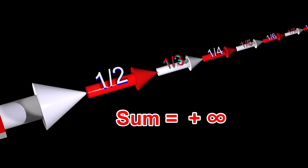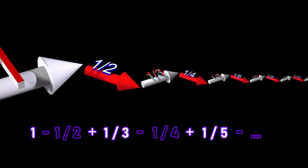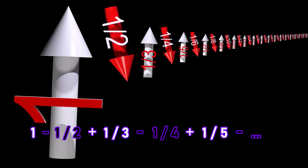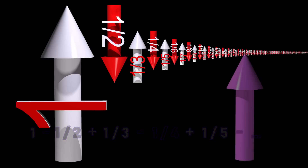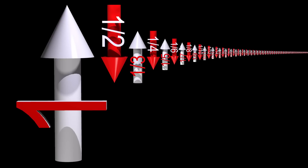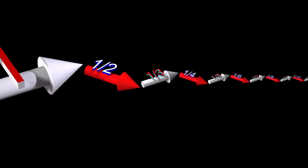Let's now multiply every other number in this sequence by negative 1. In general, when we have a sequence with a sum that approaches infinity, then we might or might not get a finite sum when we multiply every other number in the sequence by negative 1. In this example, we get a finite sum, and we therefore say that this sequence converges. However, this sequence does not converge absolutely, because it did not converge when all the terms in the sequence were positive.